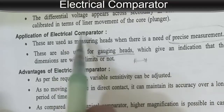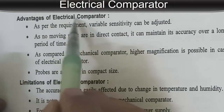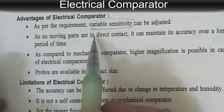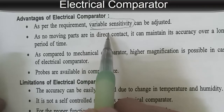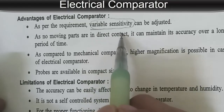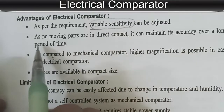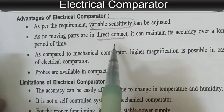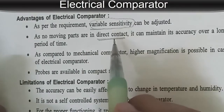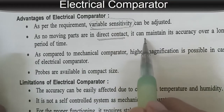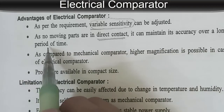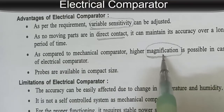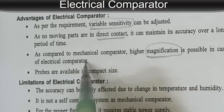Advantages of the electrical comparator: variable sensitivity can be adjusted as per requirement — sensitivity means for a particular input, what should be the output, and that we can adjust. As there are no moving parts in direct contact, the core moves inside but does not touch, so there is no direct contact of moving parts, and it can maintain accuracy over a long period of time. Higher magnification is possible as compared to a mechanical comparator, and probes are available in compact size.